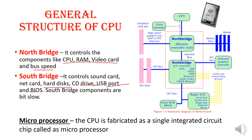Then, come to the microprocessor definition. The CPU is fabricated as a single integrated circuit chip, called a microprocessor.